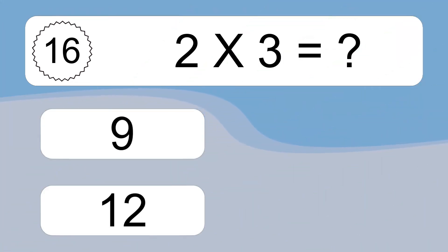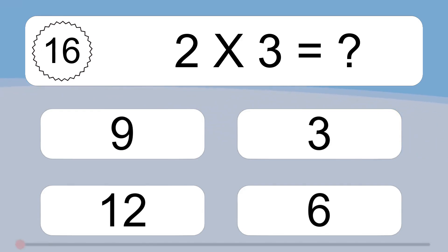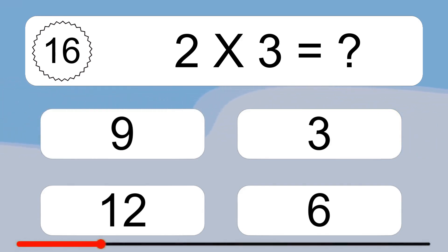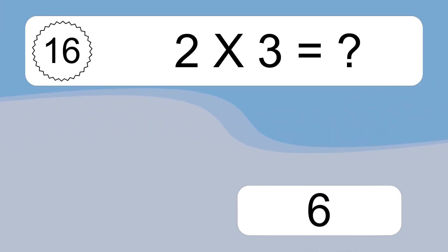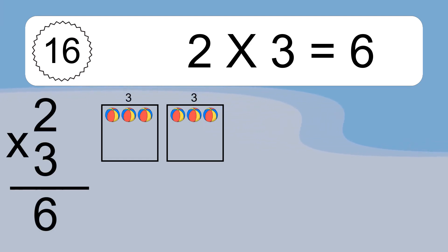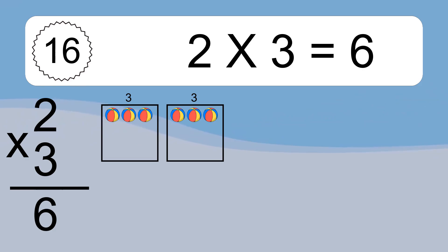2 times 3 equals what? 2 times 3 equals 6. We have 2 boxes, and each box has 3 colorful balls inside. If you count all the balls in all the boxes together, you will have 2 times 3 balls. This equals 6 balls.